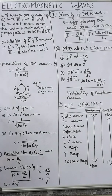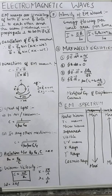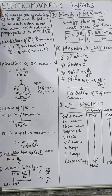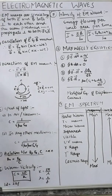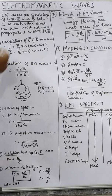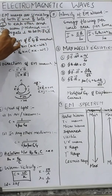What are electromagnetic waves? In an electric field or magnetic field, it will produce a wave which will be perpendicular to both. Both electric field as well as magnetic field will be present in that particular wave. Electromagnetic waves consist of both electric field and magnetic field, both perpendicular to each other, and the wave produced will propagate perpendicular to both electric field and magnetic field.